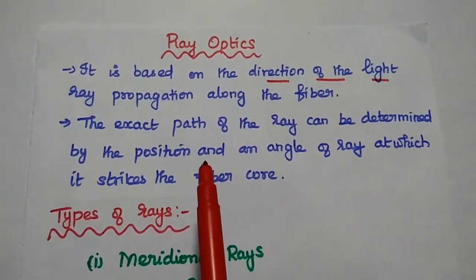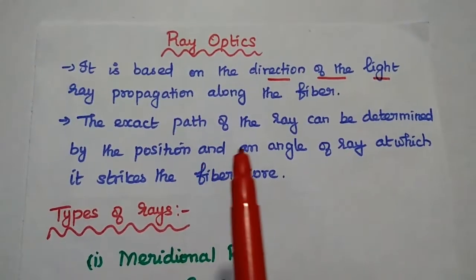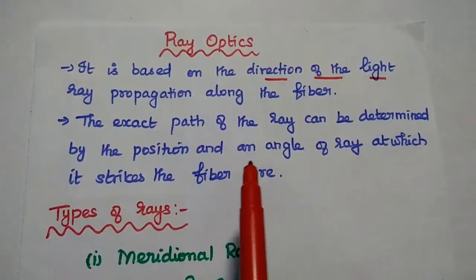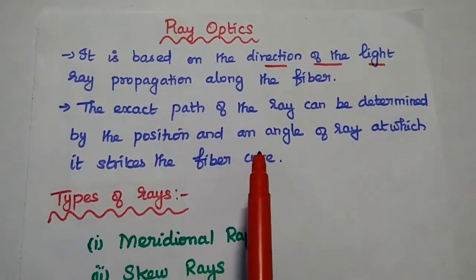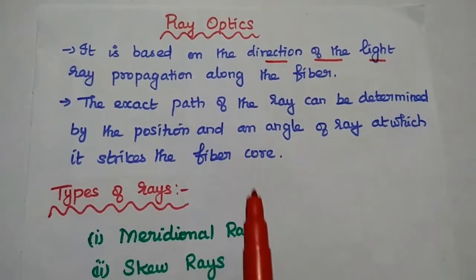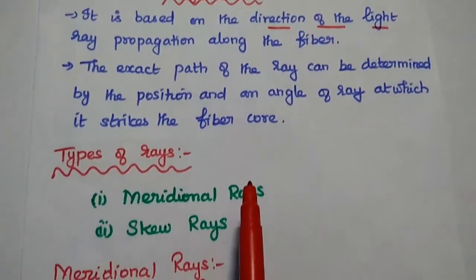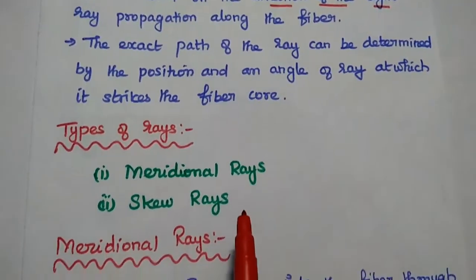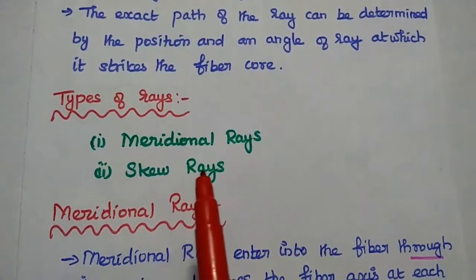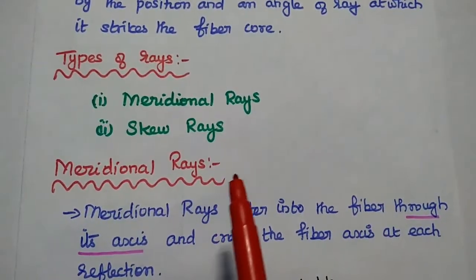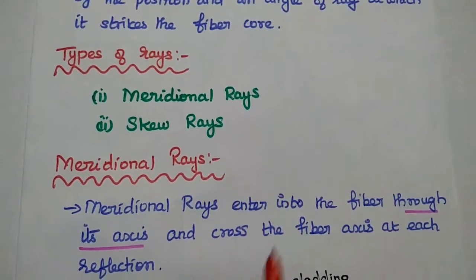Ray optics is based on the direction of the light ray. So based on the path, there are two types: one is meridional rays and one is skew rays.